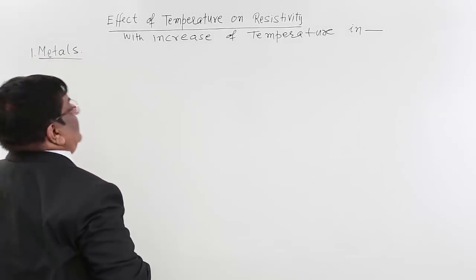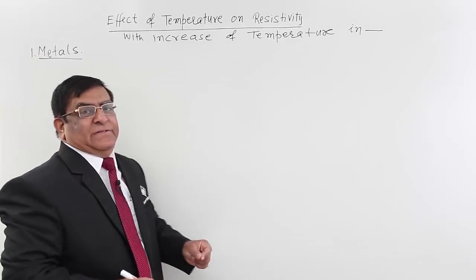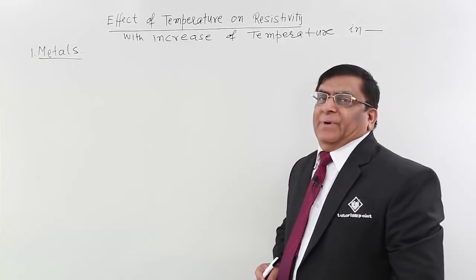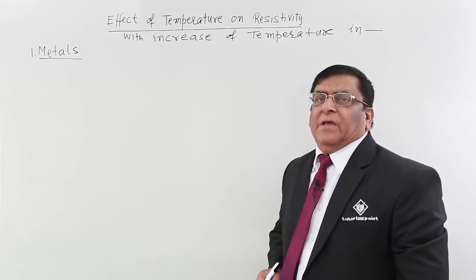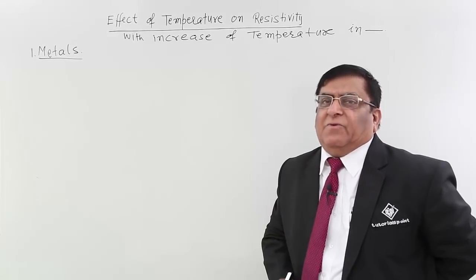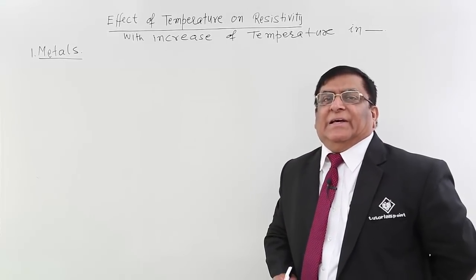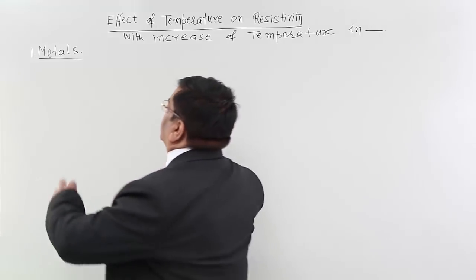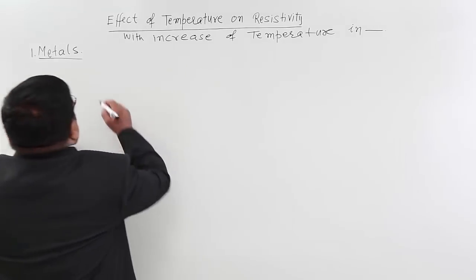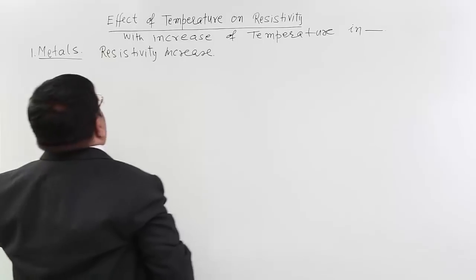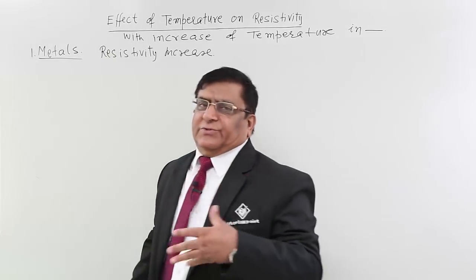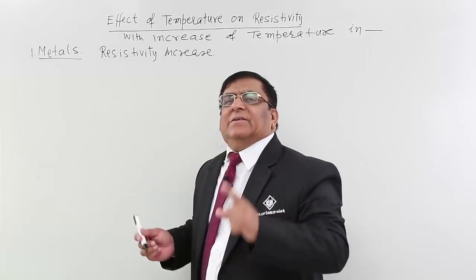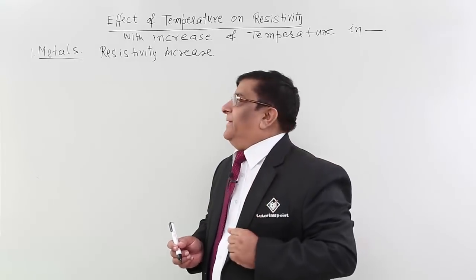First we are going to study what happens to the metals when we increase the temperature. In metals when we increase the temperature, the resistivity increases. If resistivity increases, of course resistance increases because resistance is resistivity multiplied by L upon A.